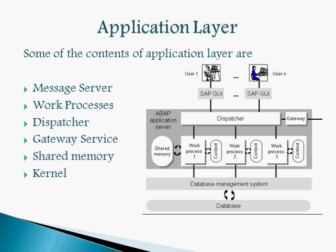The shared memory is a common main memory area used by all work processes on an application server to save context or buffer constant data locally. The kernel is a directory containing all the executables required to run the SAP system — in simple terms, the kernel is the heart of the SAP system, containing executables needed for starting and stopping SAP.